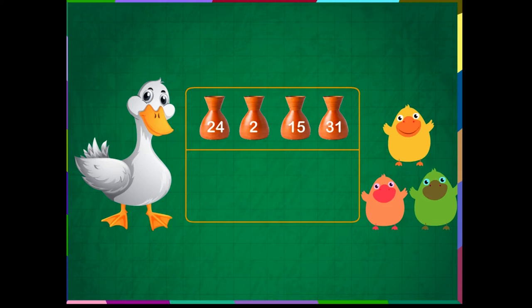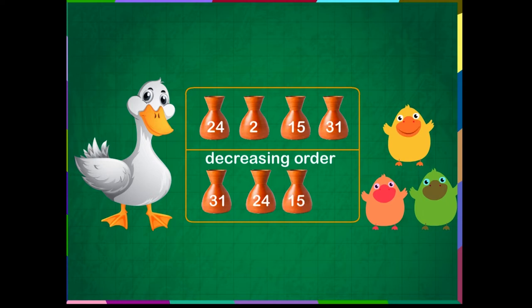Decreasing order means greatest to the smallest. We can arrange these flower vases in decreasing order of the numbers written on them. So, the vase with number 31 comes first, then 24, then 15, and at last, the vase with number 2.